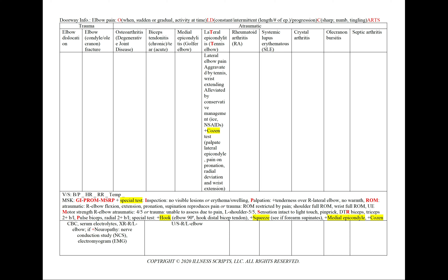In lateral epicondylitis, or tennis elbow, we'll find lateral elbow pain. It will be aggravated by tennis or any activity that involves wrist extending, and alleviated by conservative management, ice, or NSAIDs. And as we'll see in our physical exam, a positive special test — Cozen's test. We'll add an ultrasound of the right or left elbow.